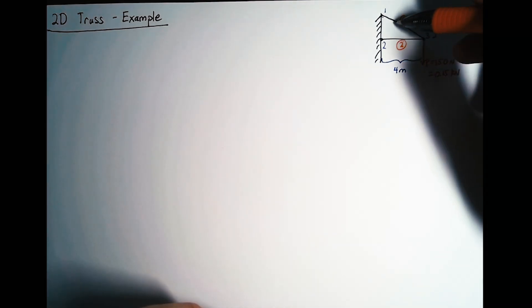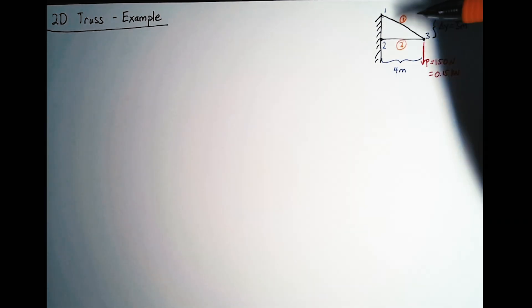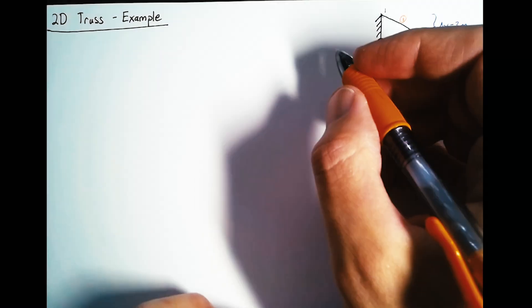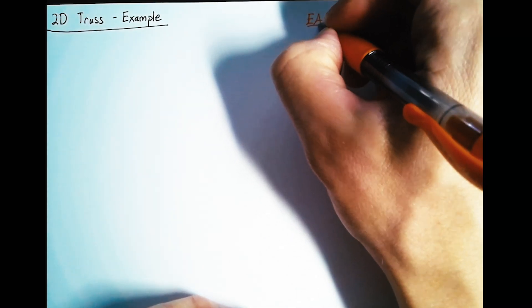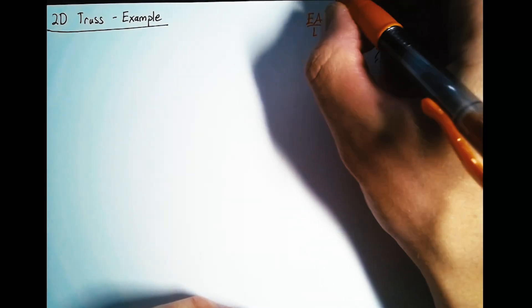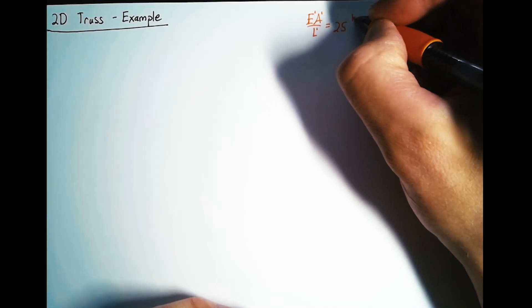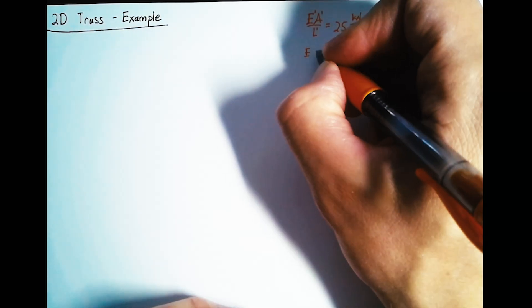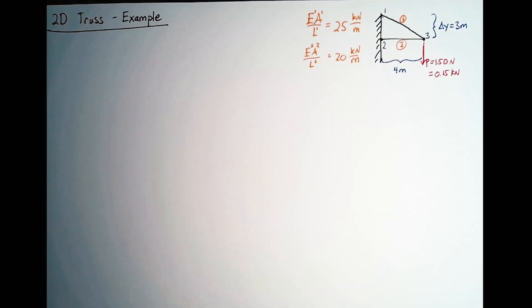We need to provide the material properties and geometric properties of these truss elements themselves. The stiffness of a truss element is EA over L. For element 1, we're going to give that a value of 25 kilonewtons per meter. And for element 2, that's going to be 20 kilonewtons per meter.